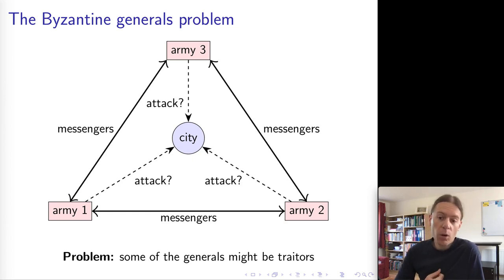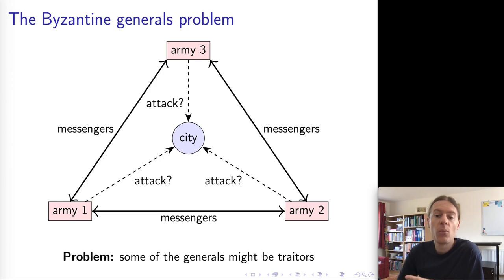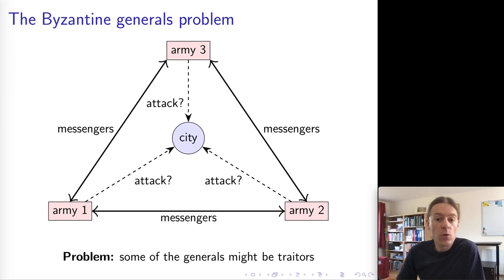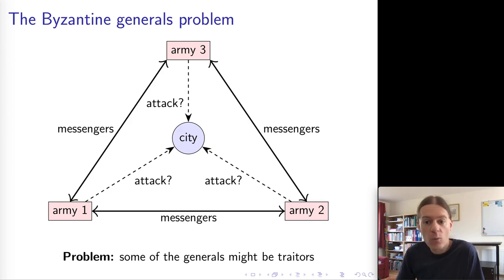We make the problem easier in one way and harder in another. Easier: we assume that messaging is reliable — messengers don't get captured, and any message that gets sent will actually be received by the appropriate recipient. Harder: we now assume that some of the generals are not loyal — they are traitors, they are malicious, and they are going to try to actively undermine the other generals. They will lie, deceive, and generally misbehave in any way they wish.